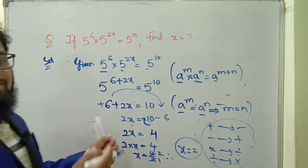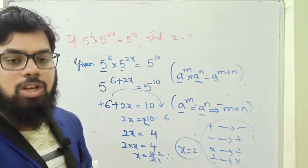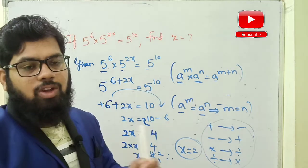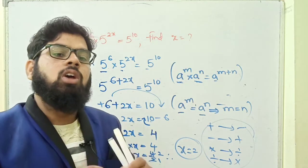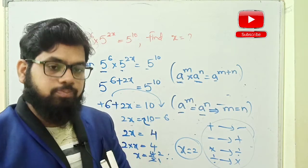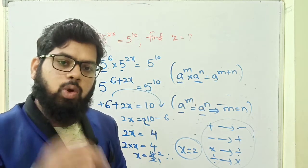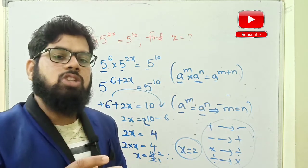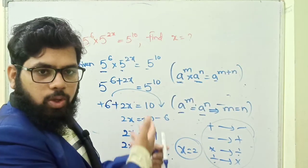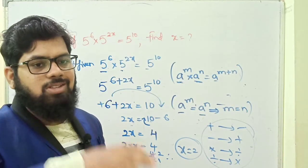Friends, if you understand this problem, go and do the remaining sums. This is taken from the 7th class mathematics textbook, chapter: Exponents and Powers. If you have any doubts, comment the question number or take a snapshot and upload it. For any problem, any chapter, any class, just comment and we will upload a solution video. If you understand, please like and subscribe.